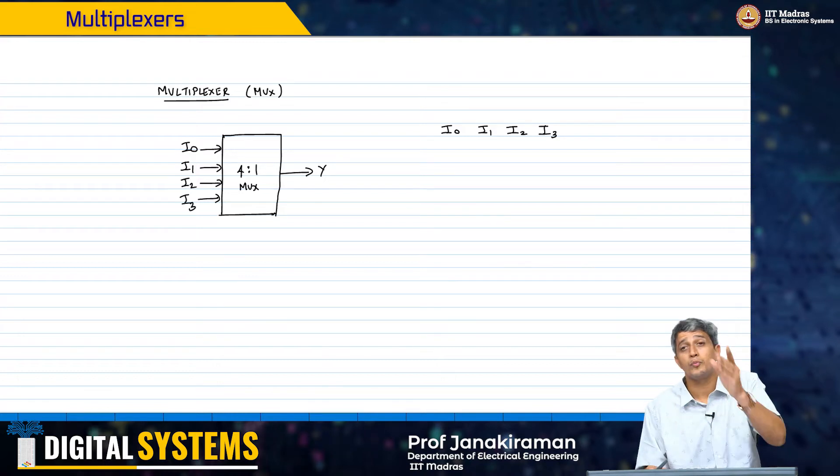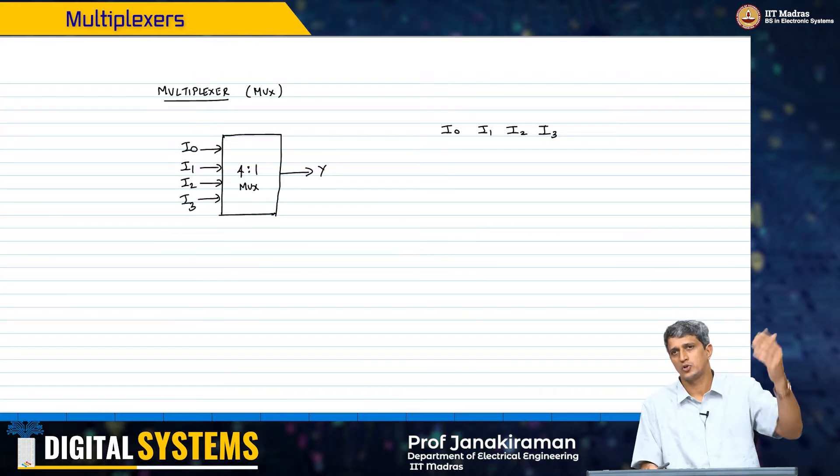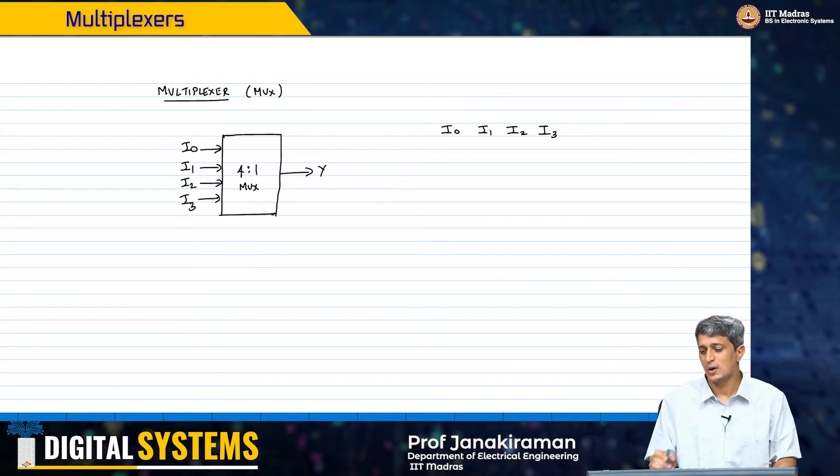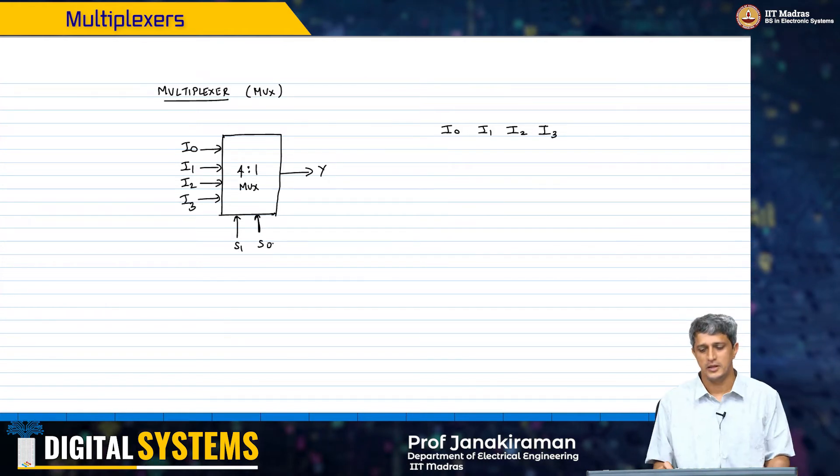The decoder, the output was in powers of 2. Here we are saying the inputs, the number of inputs will go in powers of 2: 4 to 1 multiplexer, 8 to 1 multiplexer, 16 to 1, 32 to 1 and so on. So, I have four inputs and I obviously need two other select lines S1 and S0.